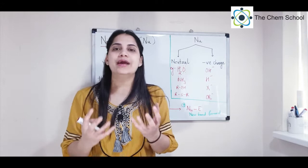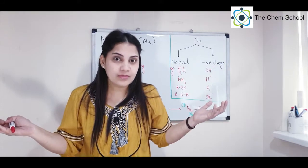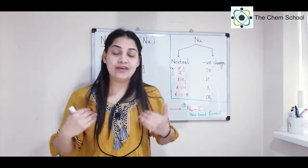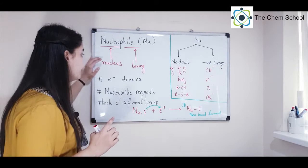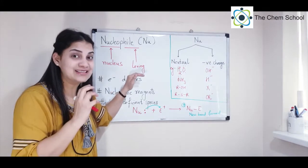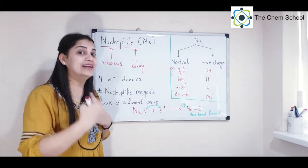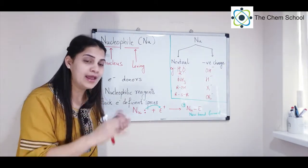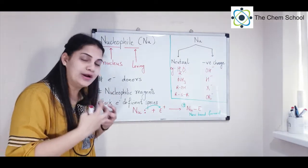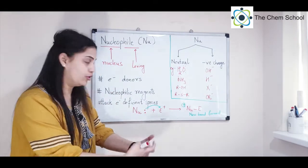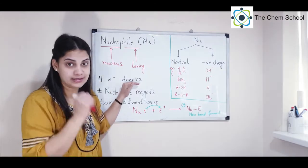To get stability in chemistry, you either donate the excess electrons or gain electrons if you are deficient. So if a nucleophile is nucleus-loving and electron rich, to become stable it needs to donate its electrons, because neutral species are always more stable. Therefore, nucleophiles are electron donors.